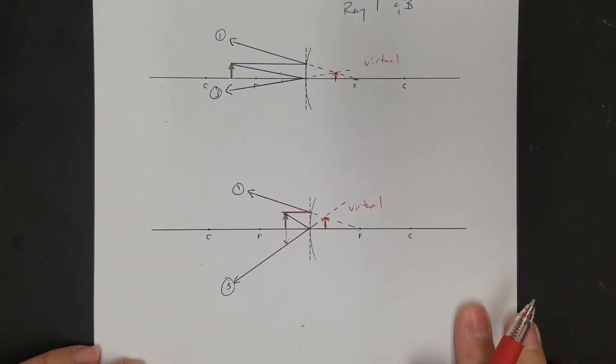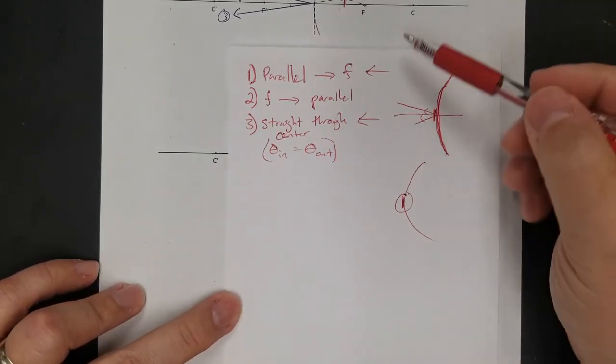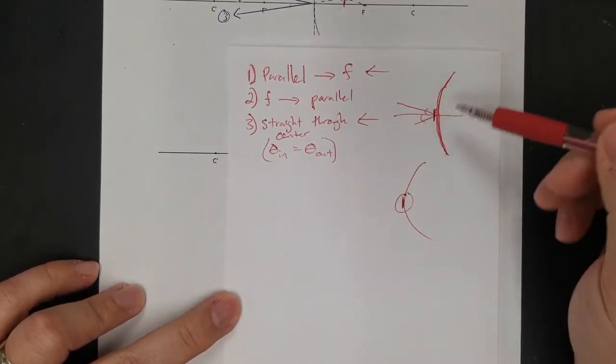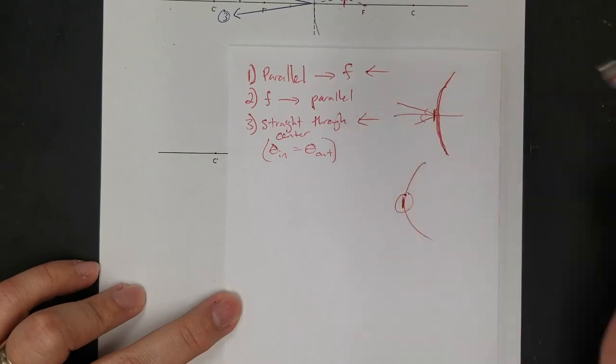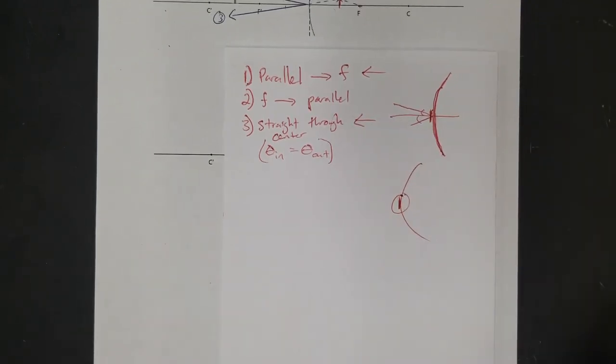So mirrors are the same thing as lenses, with the same rules — except for the third ray, where you use the law of reflection.